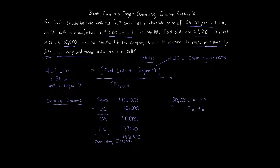Now we can plug in the operating income of $82,500. We multiply by 1.3 — because if we're at 100% that's 1.00, and increasing by 30% adds 0.3, so you get 1.3. So 1.3 times $82,500 equals $107,250. That is what we put in for the target profit. So in the formula, the target profit is $107,250, and the fixed costs are $7,500. We divide that by the contribution margin per unit.